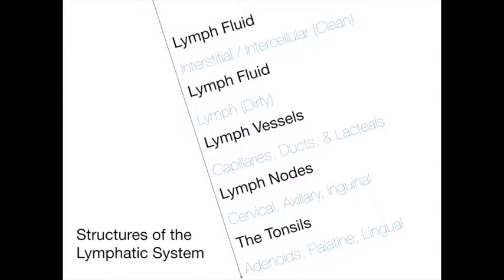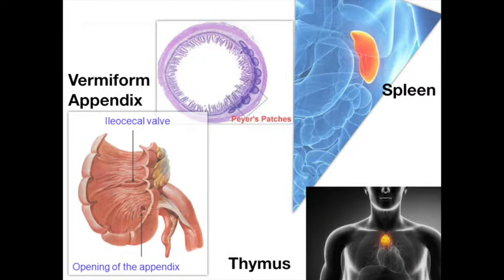Lymph nodes are small, bean-shaped structures located in lymph vessels that provide a site for lymphocyte production. These nodes filter lymph to remove harmful substances such as bacteria, viruses, and malignant cells as lymph flows through the node. Swollen lymph nodes are often indications of a disease process. The tonsils are masses of lymphatic tissue that form a protective ring around the nose and upper throat. The vermiform appendix and Peyer's patches protect against the entry of invaders through the digestive system.